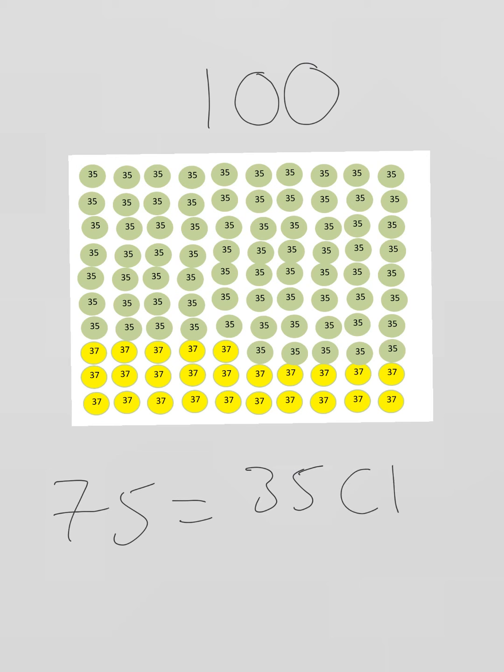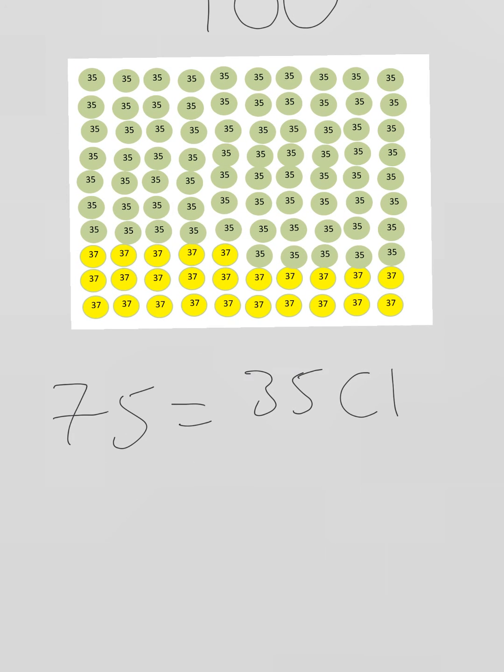So in this case, the chlorine-35 isotope. And 25 atoms have a mass of 37, or the chlorine-37 isotope.